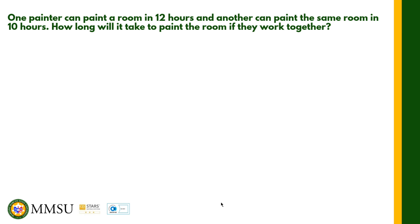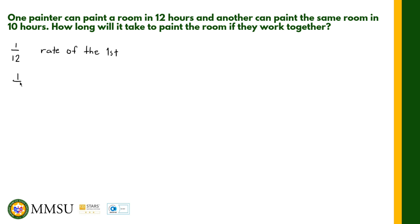Let us take a look at the rate of each painter. One painter can paint a room in 12 hours, therefore the rate of the first painter is 1 over 12, because he can paint the whole room in 12 hours. For the second painter, he can complete the room in 10 hours, so the rate is 1 over 10. That is the rate of the second painter.